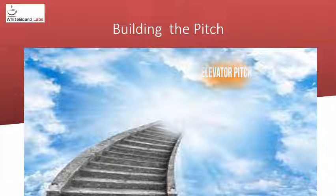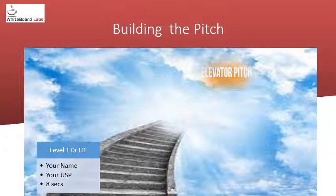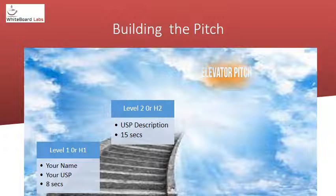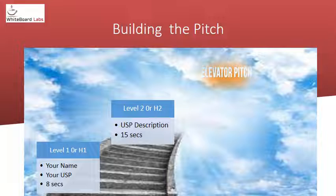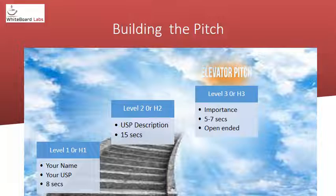The time breakdown should be something like: Level 1 — your name and what you do should be 8 seconds or less. Level 2 — a slightly lengthier description of your USP can be around 15 seconds. Level 3 — the importance of what you do to the industry or person can be another 5 to 7 seconds, ending in an open-ended question.